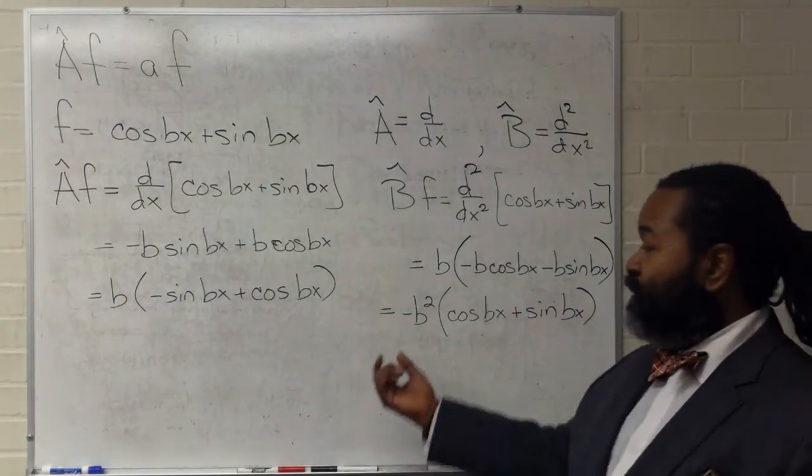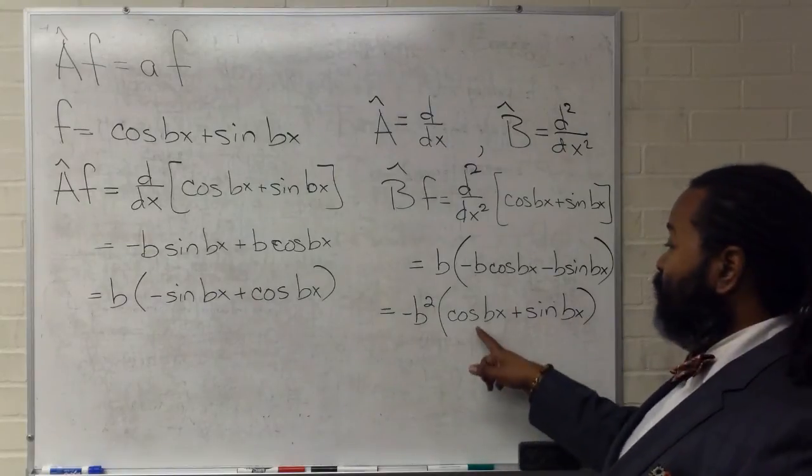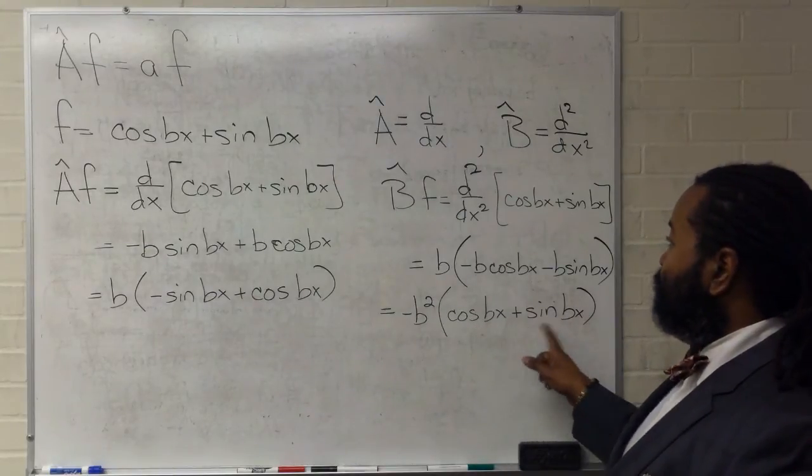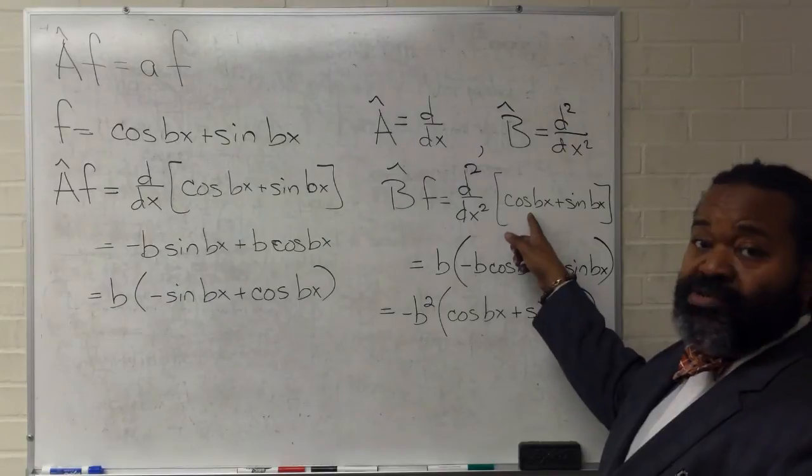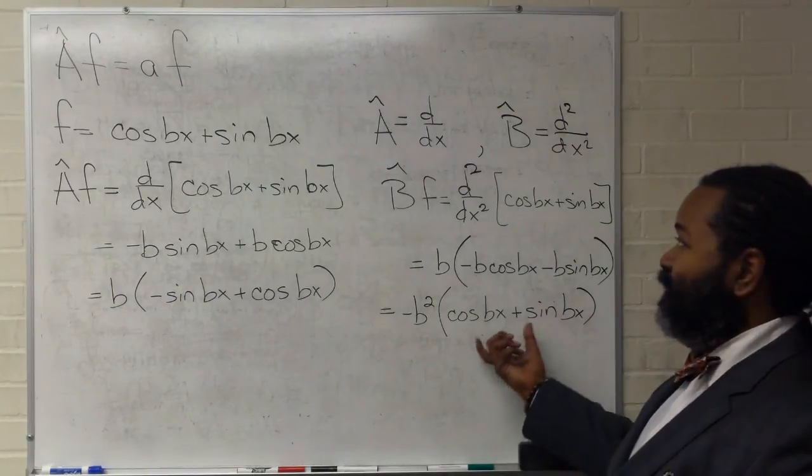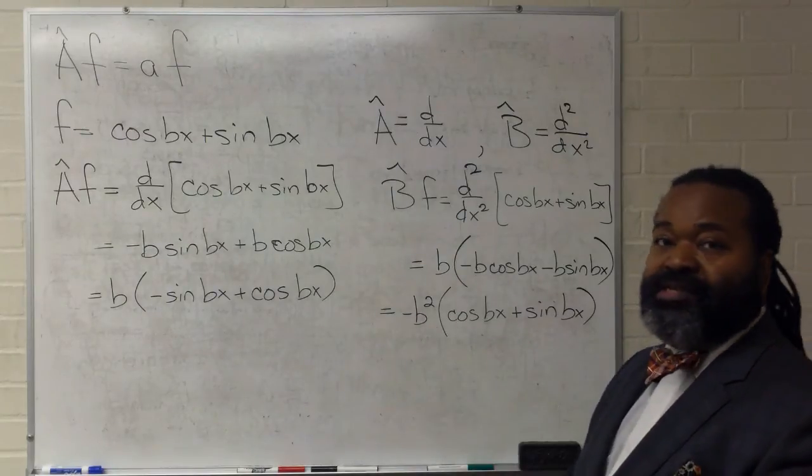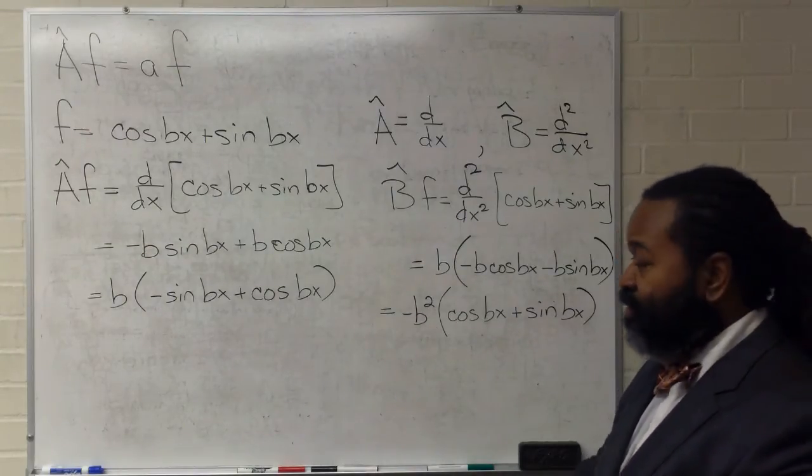In this case, again, we have some constant, which is our scalar, times the function. And in this case, cosine bx plus sine bx is identical to the original function. So, we're able to pull that out and point out that that is an eigenfunction. And because this is the constant sitting in front of it, that is the eigenvalue.